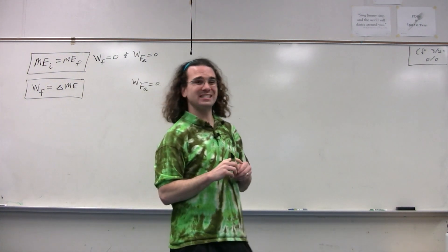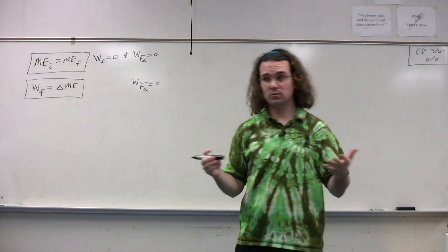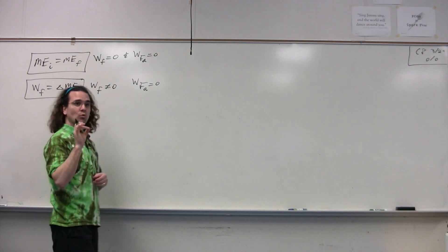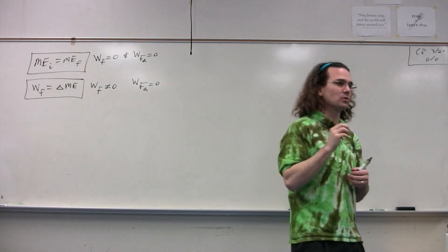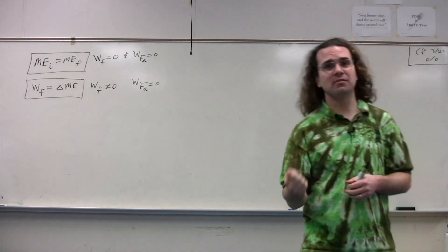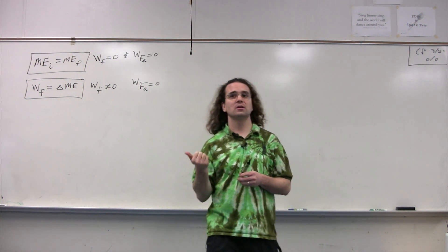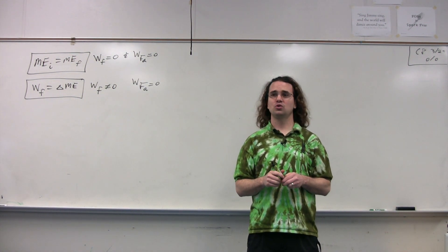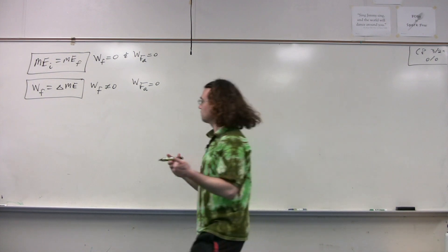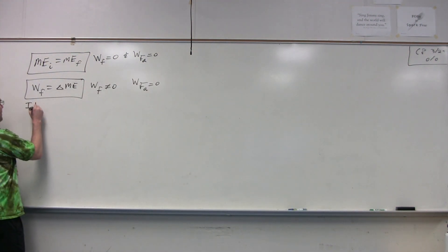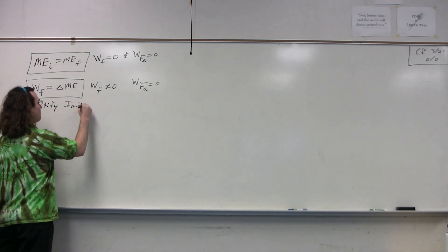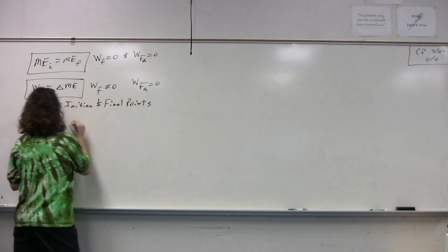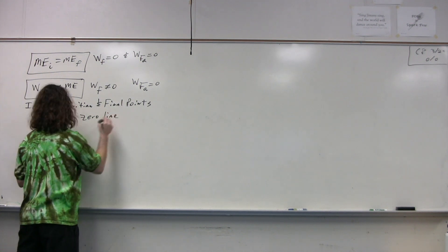What about the work done by friction — does that have to be equal to zero? No. The difference between these two equations is that the work done by friction does not have to be equal to zero; however, the work done by the applied force still needs to be equal to zero. Whenever we use either of these two equations, we must identify initial and final points and the zero line.